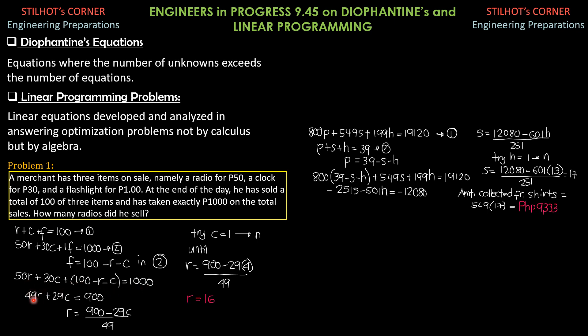We have a denominator of 49. So, we set C equals 0, 1, 2, and so on and so forth until such time that we can find the value of R, which is a whole number. So, try C equals 1 up to N until we get C equals 4. So, R is 900 minus 29 times 4 over 49. And R equals 16. So, having found R equals 16, that is really the number of radios sold for that day.